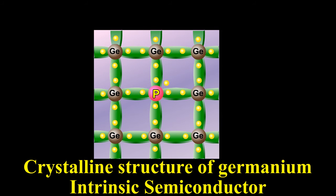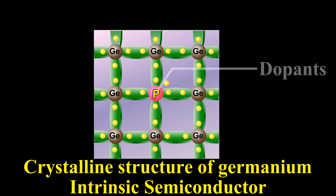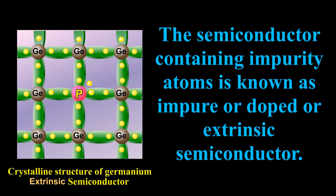The impurity atoms are called dopants. The semiconductor containing impurity atoms is known as impure or doped or extrinsic semiconductor.